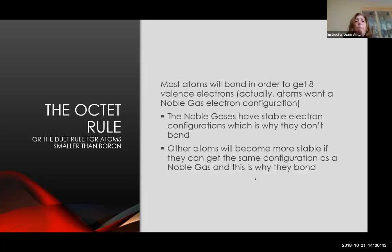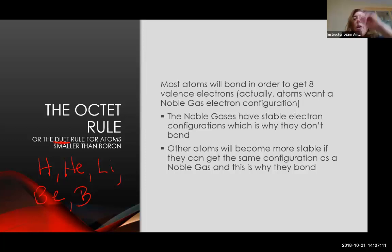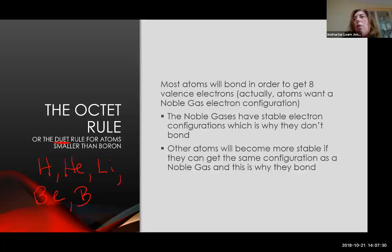There is also a part of the octet rule that talks about duets. Duets are for very small atoms — specifically the first five: hydrogen, helium, lithium, beryllium, and boron. Those atoms are most stable when they have two valence electrons, because they are small atoms with one shell, and that first shell is full with only two. I could rephrase the entire octet rule as: every element is looking to have a noble gas configuration. For elements closer to helium, that means two valence electrons; for larger elements, it means eight valence electrons.